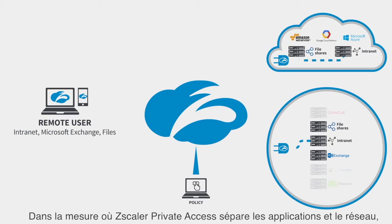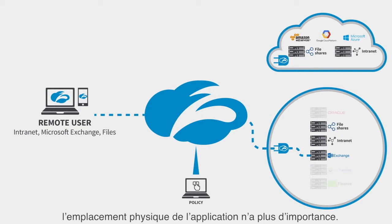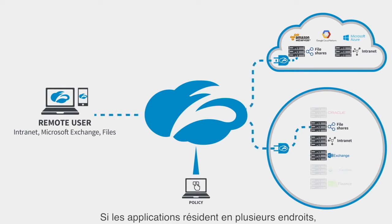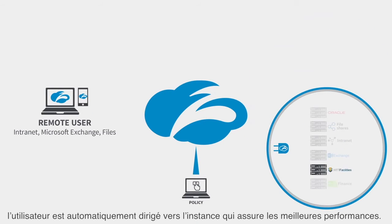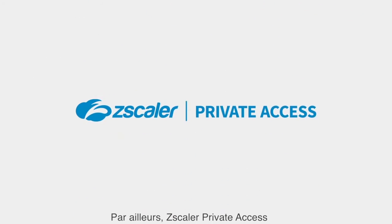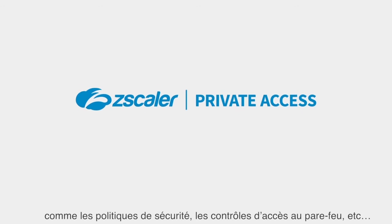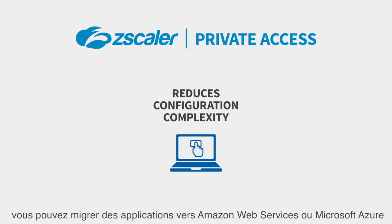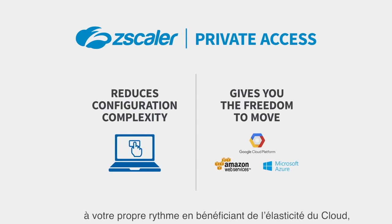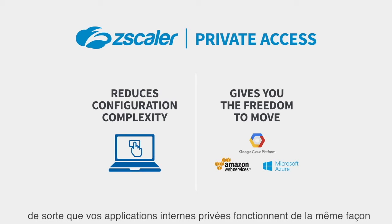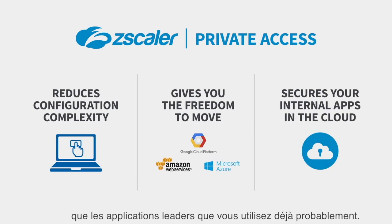Because Zscaler Private Access separates the application from the network, the physical location of the application becomes irrelevant. If apps are located in more than one place, the user is automatically directed to the instance that will give them the best performance. Zscaler Private Access also dramatically reduces the configuration complexity of things like policies, firewall access control lists, NATing, and data centers. You can move apps to Amazon Web Services or Microsoft Azure on your schedule and take advantage of the elasticity of the cloud, making your private internal apps behave just like the market-leading enterprise apps you're probably already using.